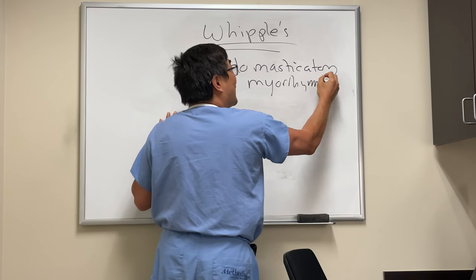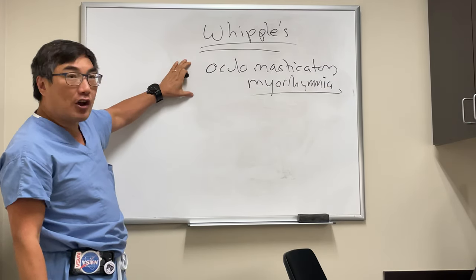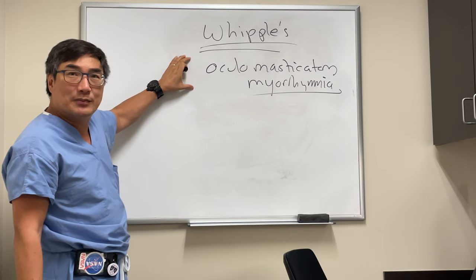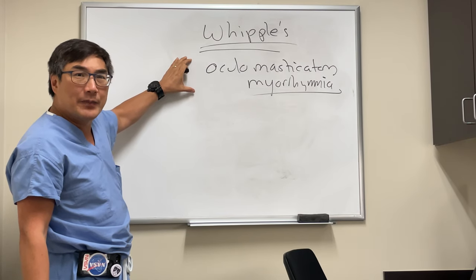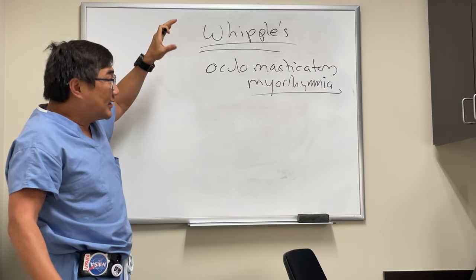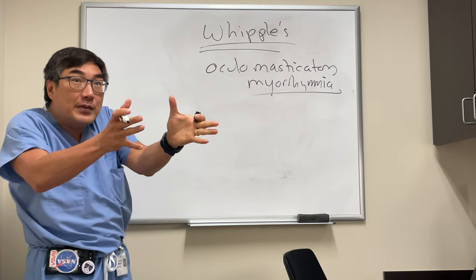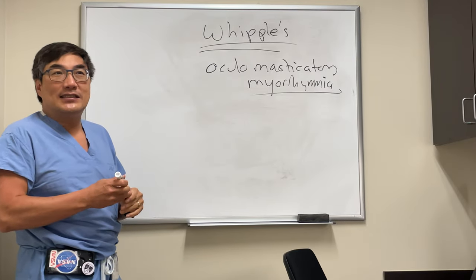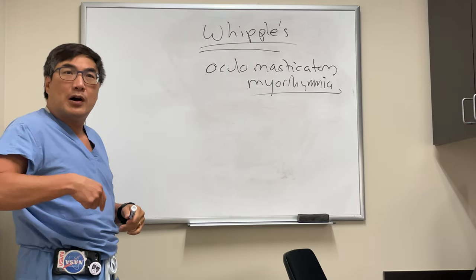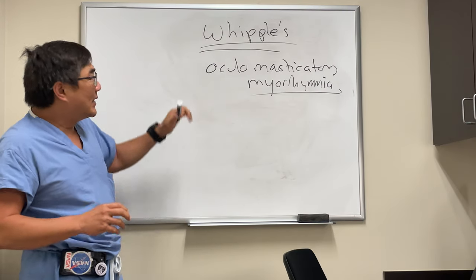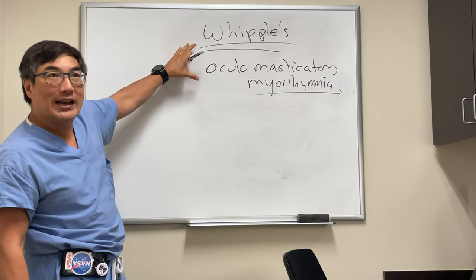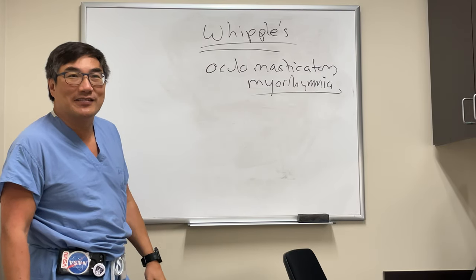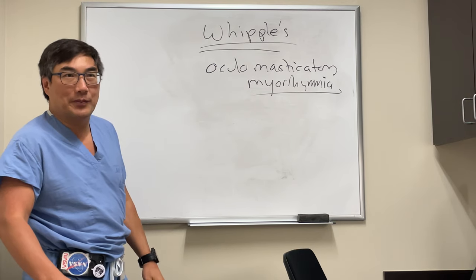That finding is called ocular masticatory myorrhythmia. Look up a video of this — if you see it, it's almost always Whipple's disease, and I'm not aware of anything else that causes it. So: diarrhea plus convergence-divergence with jaw movement, ocular masticatory myorrhythmia, and PCR in the CSF or a small bowel biopsy to confirm the diagnosis. Importantly, this is treatable with antibiotics.